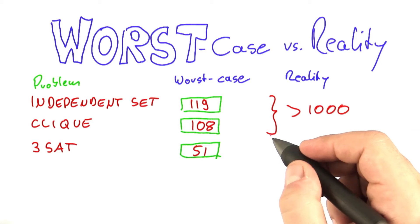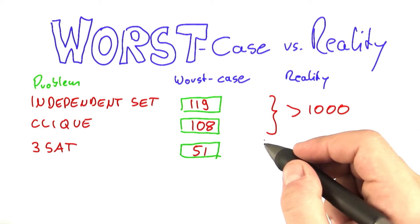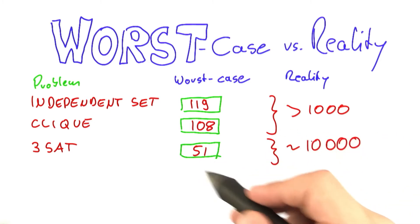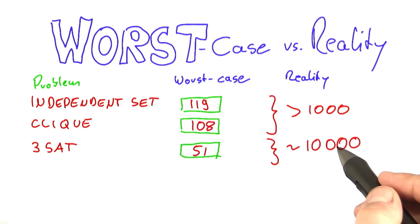And for three SAT, there are even annual competitions in which participants solve instances with, I would say almost in the tens of thousands of variables. This varies by competition. So there's some competition where it's in the hundreds and the thousands, but you can solve instances up to 10,000.